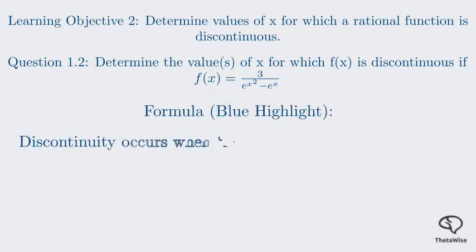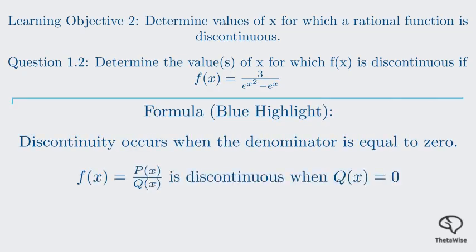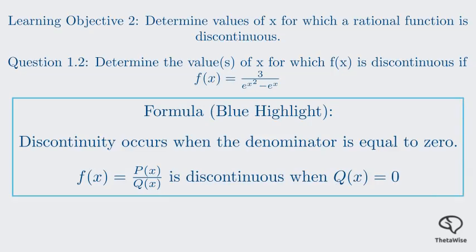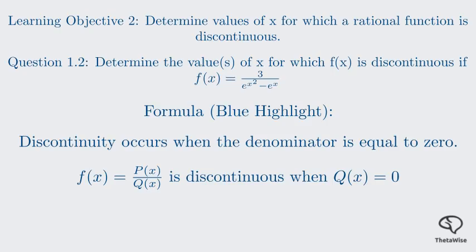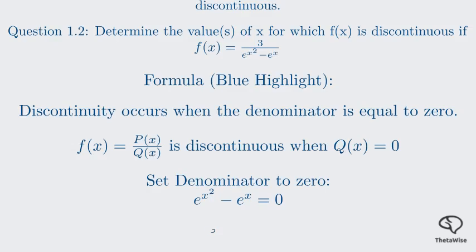So, to find where f(x) is discontinuous, we need to find the values of x that make the denominator equal to 0. Remember, you can't divide by 0, so the function is undefined at these points. Let's set our denominator to 0 and solve for x. We need to solve the equation e to the power of x squared minus e to the power of x equals 0. The first step is to add e to the power of x to both sides.